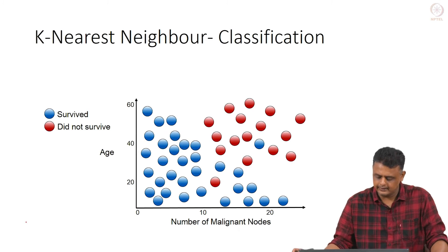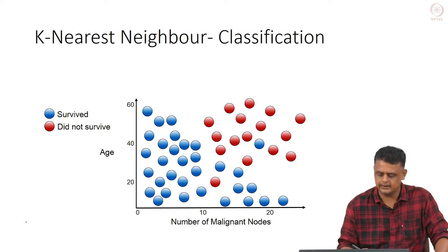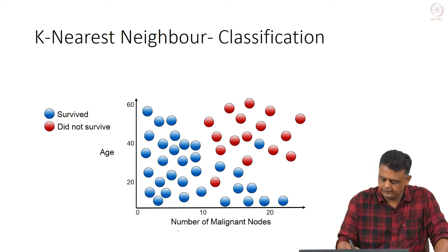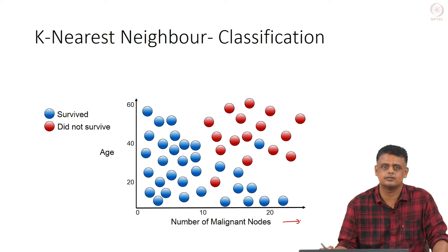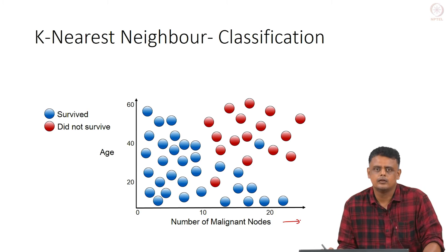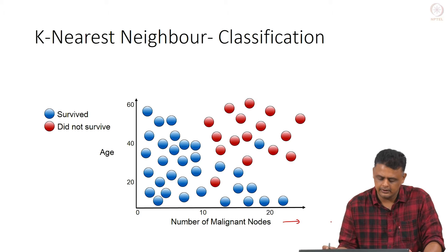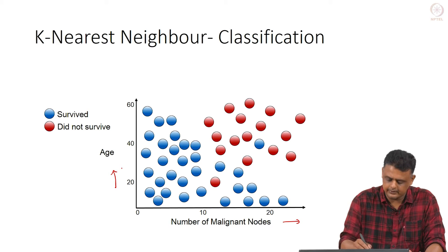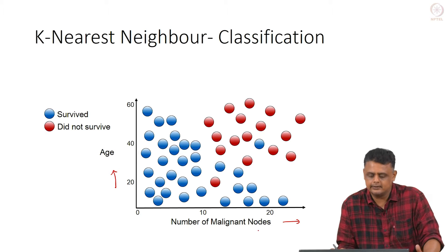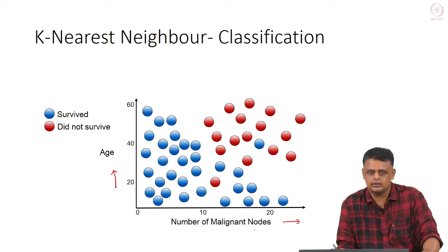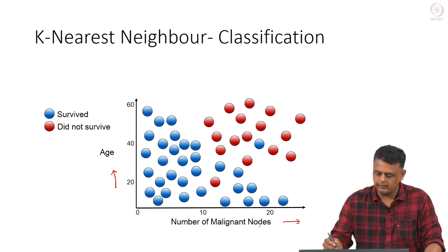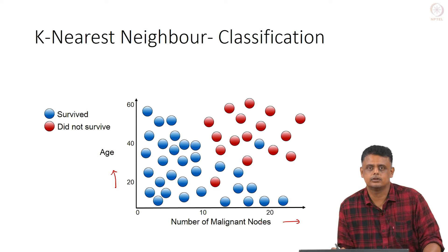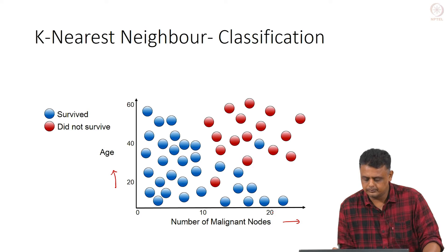Let us look at this dataset. It has two features — it is a cancer dataset. One feature is the number of malignant nodes, which are the cancerous lumps or lesions seen in the patient, maybe in the images. The other feature is the age of the patient, and what we are trying to predict is the survival of the patient — did the patient survive or not. All the red points correspond to patients who did not survive, and all the blue points correspond to patients who survived.